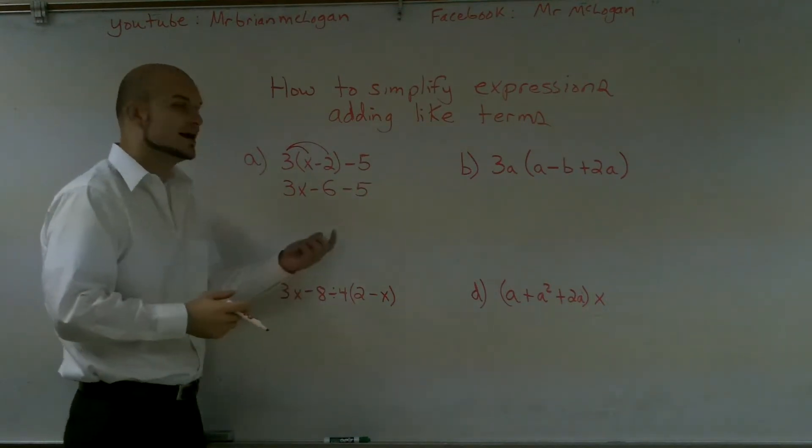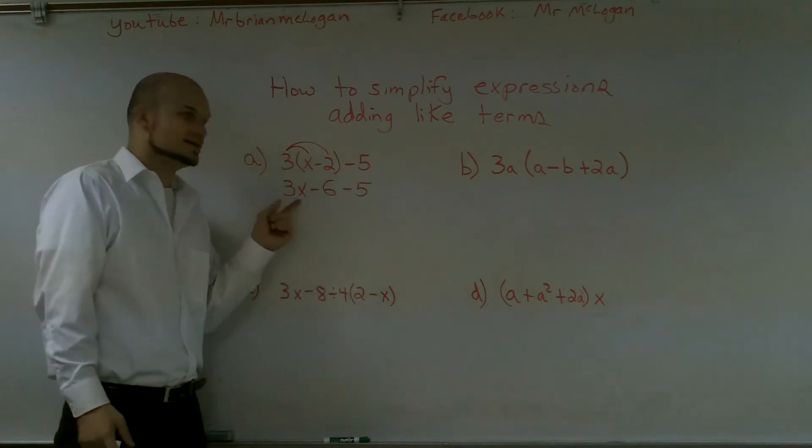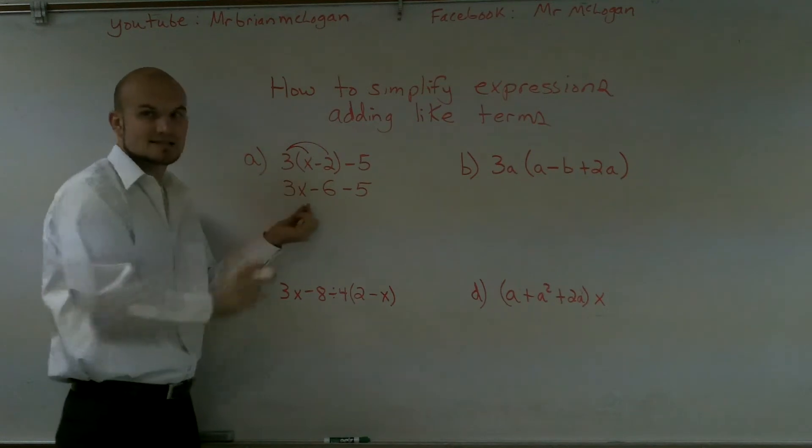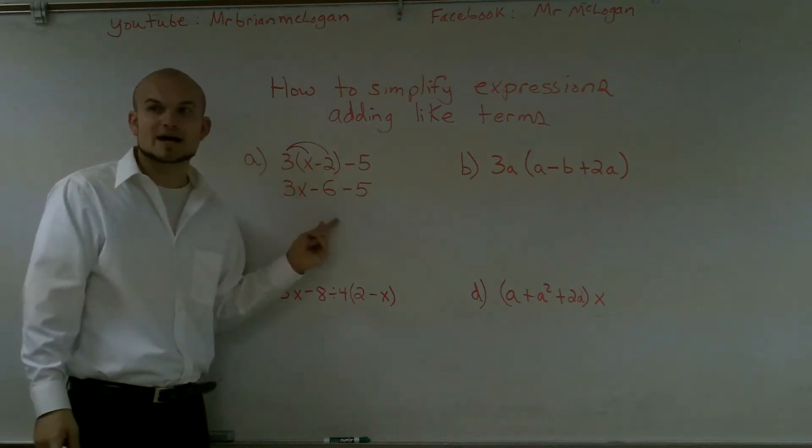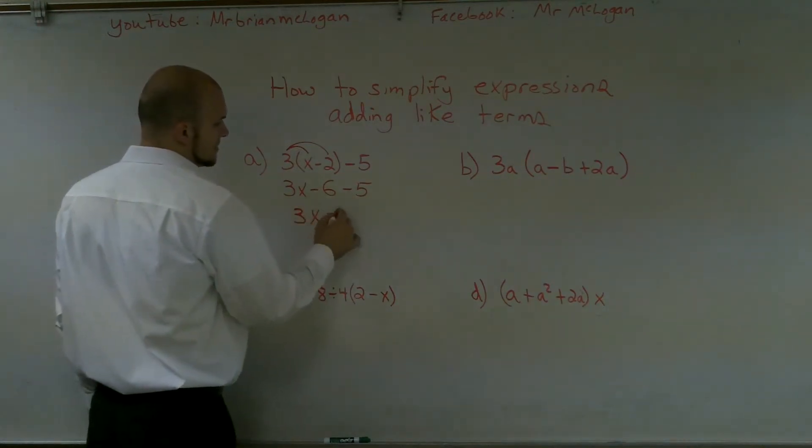And therefore now I understand that I can only go ahead and subtract a negative 6 minus 5 because those are like terms and they're not the same as 3x. x has an attached variable which we don't know the value of x. So therefore you cannot add it or subtract it to your regular numerals. So we're just going to get 3x minus 11.